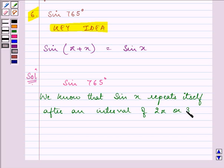So we can write sine 765 degrees as sine... Now we need to think of a multiple of 360 that is less than or equal to 765.